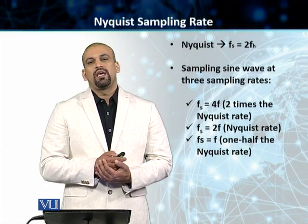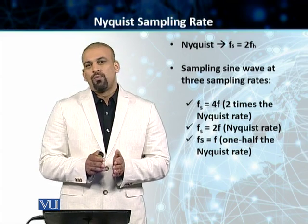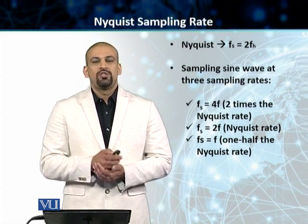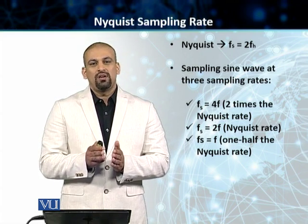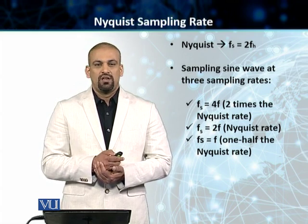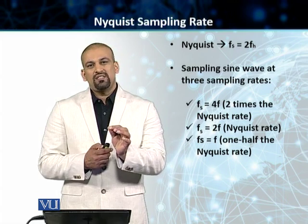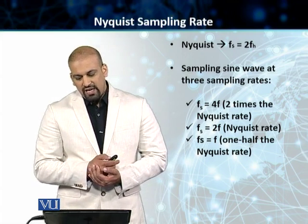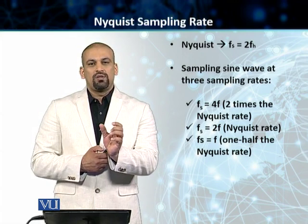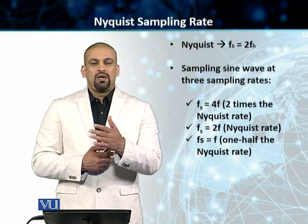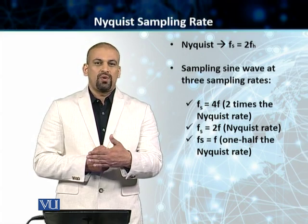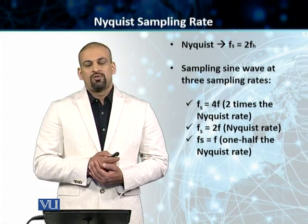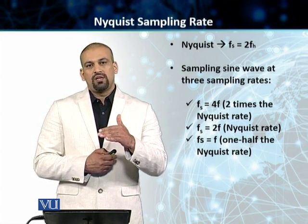Nyquist gave us a very good formula to determine the sampling frequency for an analog signal. Nyquist told us that the sampling frequency should be at least twice the highest frequency of the signal. So FS should at least be equal to 2 × FH, where FH is the highest frequency of your analog signal. The ideal is a frequency which is twice the highest frequency, but you can sample at anything equal to or above twice the highest frequency.